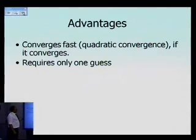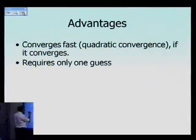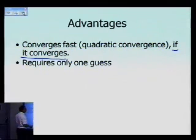So those are the two main advantages of Newton-Raphson method: that it converges fast if it converges, and it requires only one guess. If it converges is something which is the topic to talk about when we talk about drawbacks of Newton-Raphson method.